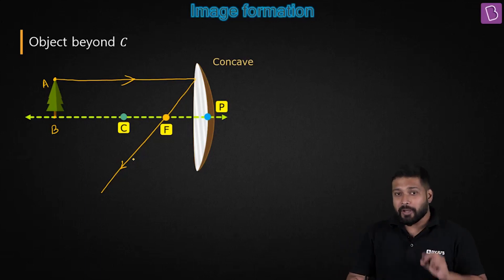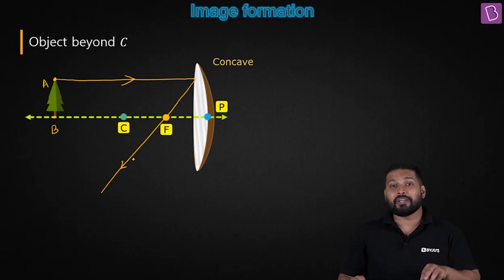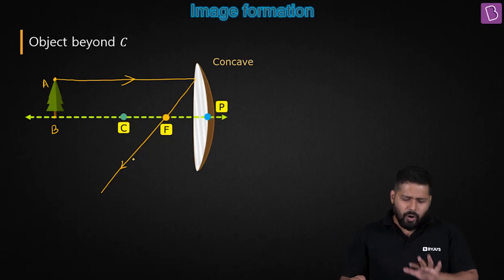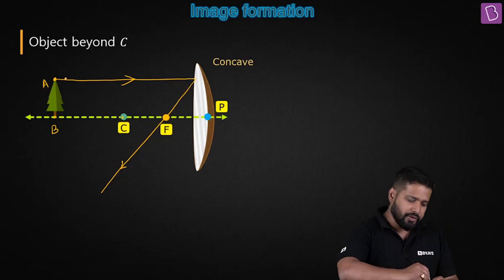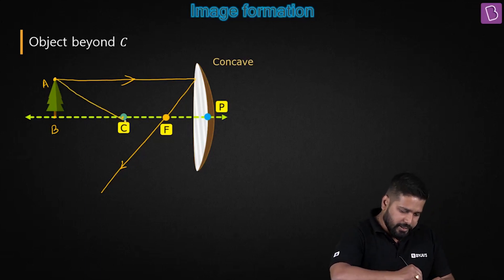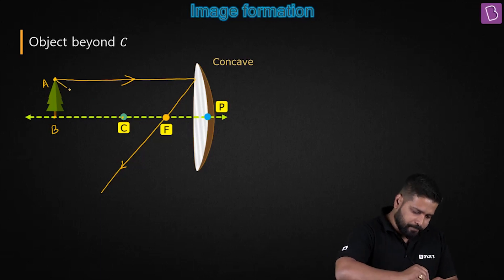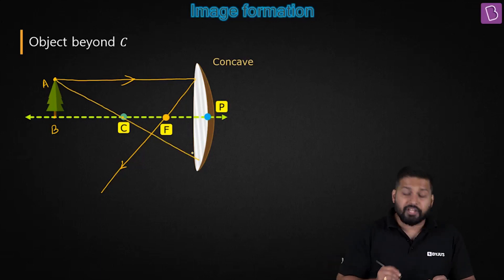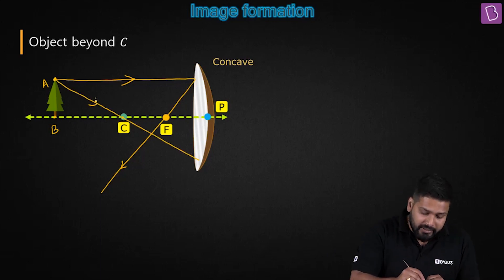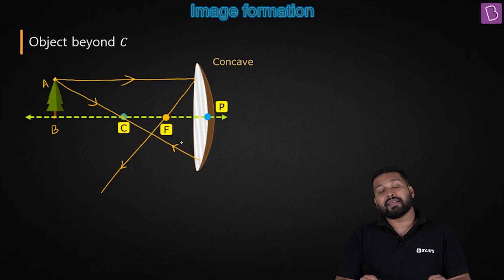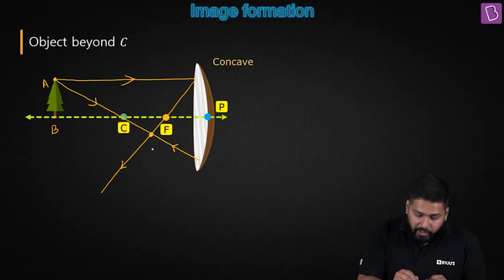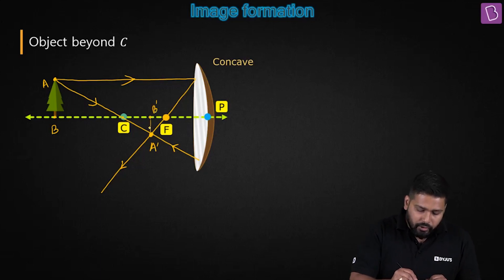Next, we have to choose one more ray because there has to be an intersection for image formation — an intersection of the reflected rays. Out of the four basic rays, I'll choose one ray which is passing through the center of curvature. If I draw a diagram such that it passes through C, I know its nature: it's going to retrace its path. So on reflection it retraces its path, giving us point A-dash and point B-dash.